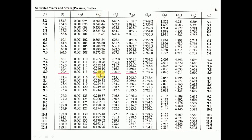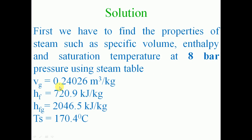Vg is the specific volume of saturated steam, which is 0.24026 meter cube per kg. HF is the sensible heat, equal to 720.9 kilo joule per kg, and HFG is the latent heat, equal to 2046.5 kilo joule per kg. So the values taken from the steam table are: Vg = 0.24026 m³/kg, sensible heat = 720.9 kJ/kg, latent heat = 2046.5 kJ/kg, and saturation temperature at 8 bar = 170.4 degree Celsius.